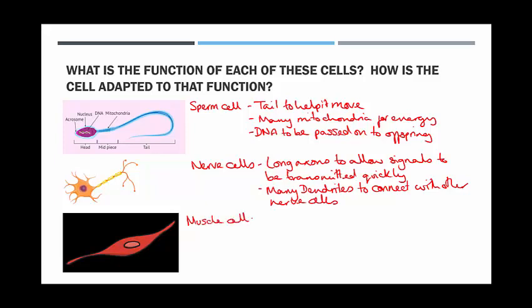Our third cell on this slide is a muscle cell. Muscle cells, first of all, need to have lots and lots of mitochondria because they need lots of energy for movement. Secondly, their shape can change. They can contract and relax, and that's what causes the muscle as a whole to contract and relax.